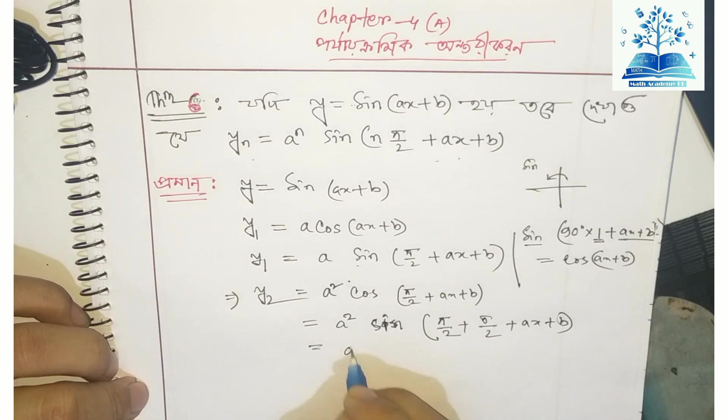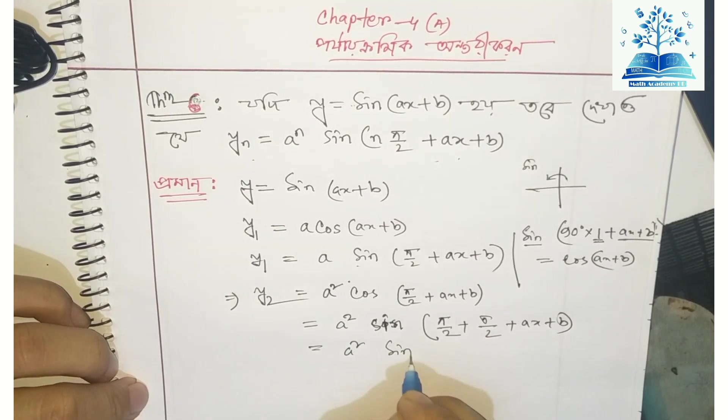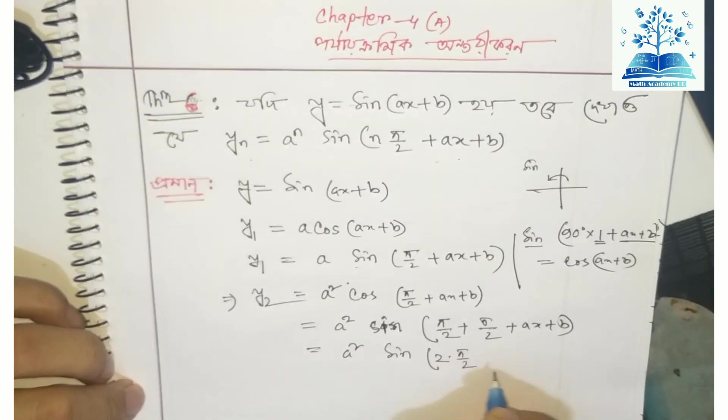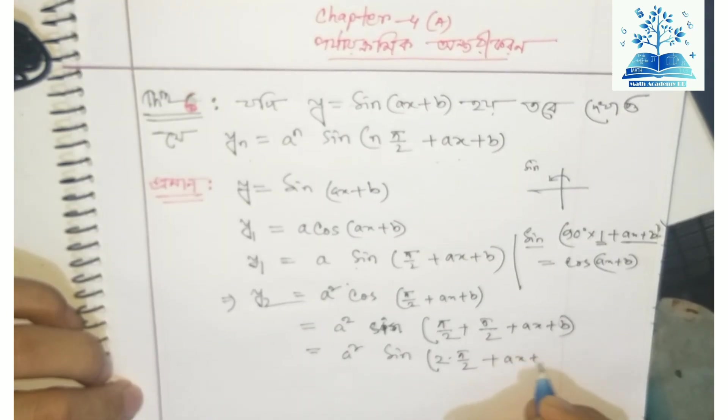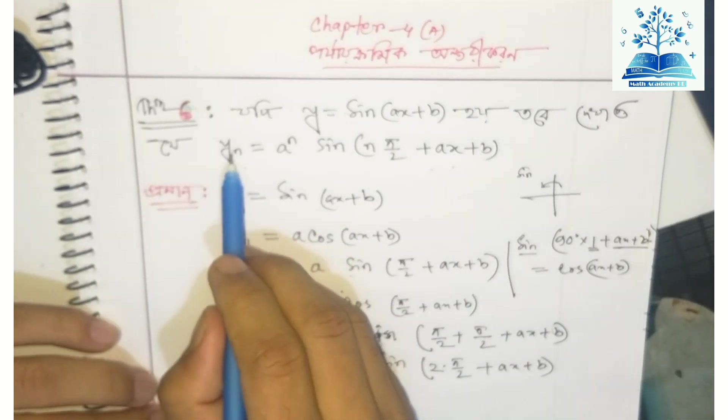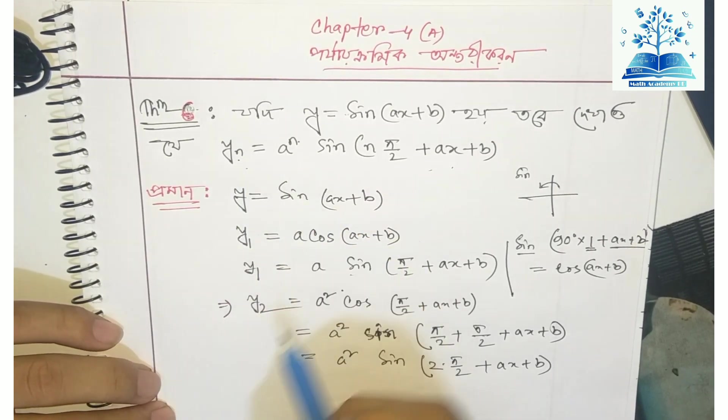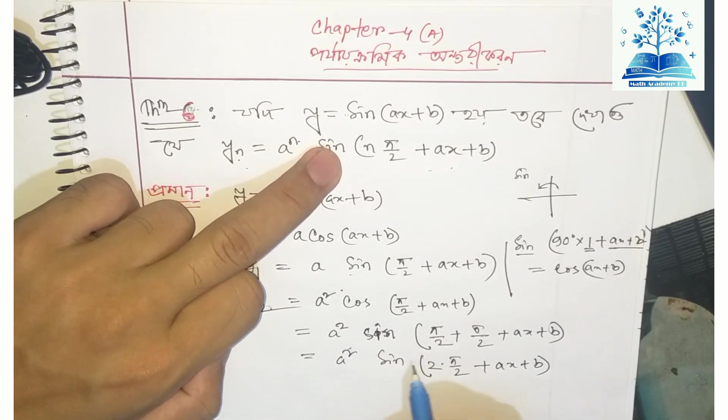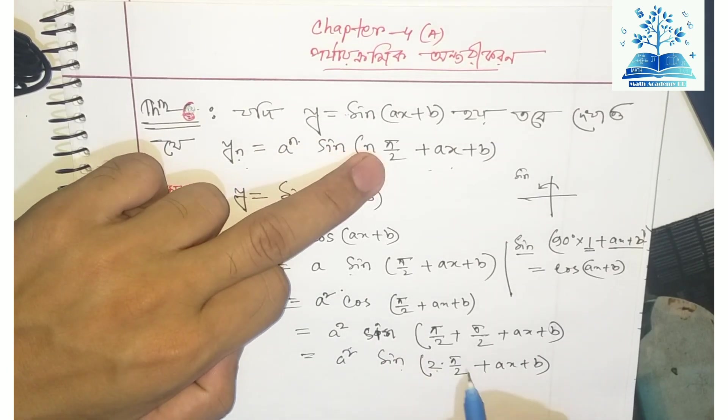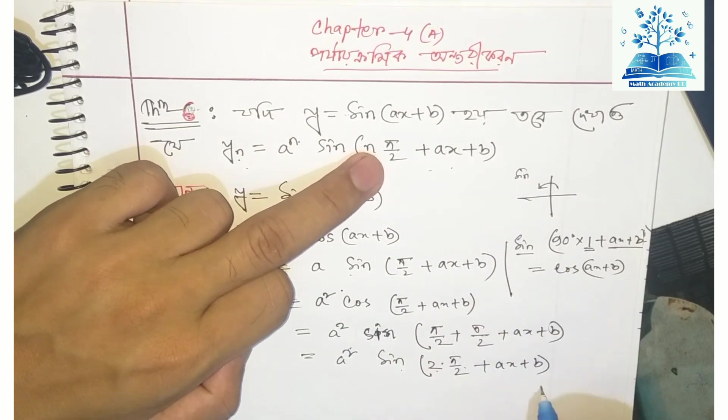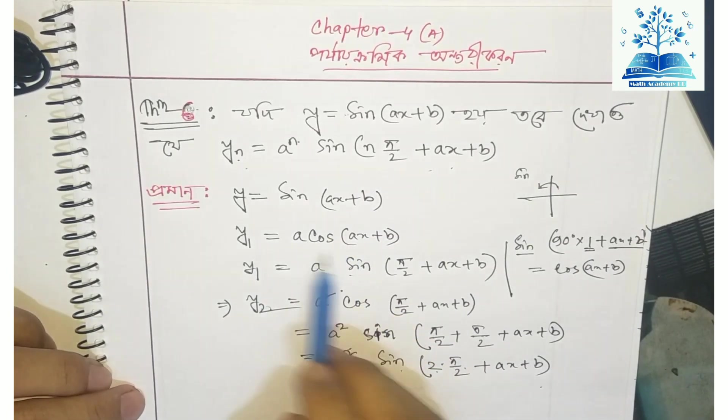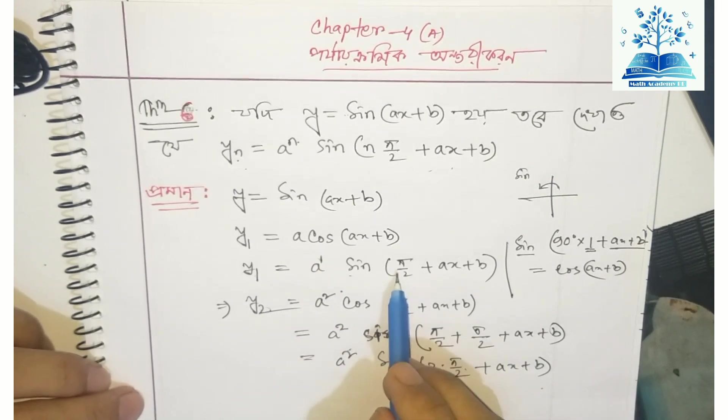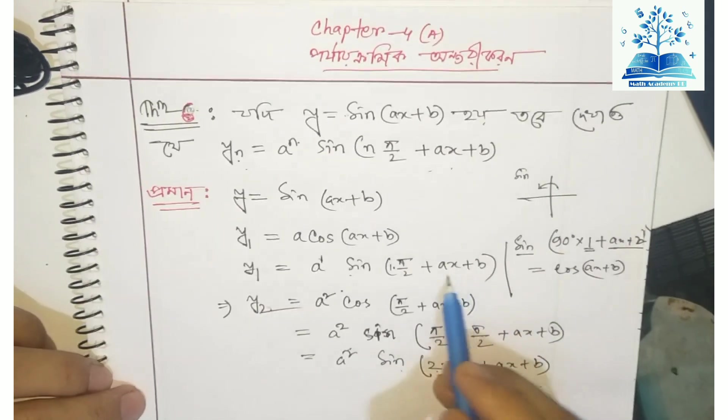So y₂ equals a² sin(π + x + b). In general, yₙ equals aⁿ sin(n·π/2 + x + b). This is the formula.